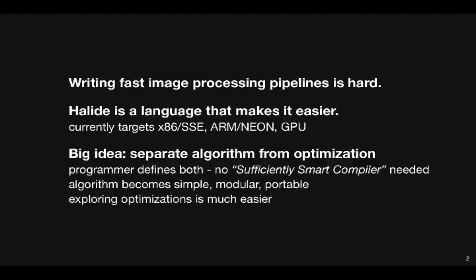We're interested in the pipelines you find in your camera and PC and mobile apps like Adobe Lightroom and Instagram. The big idea of Halide is to separate the definition of the algorithms in the pipeline from the concerns of optimization, things like SIMD vectorization, tiling or parallelization. This makes the algorithms much simpler, more modular and more portable.